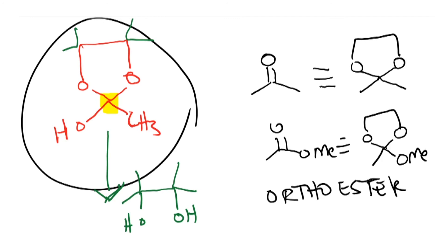To recap: the important difference between the Woodward modification and the Prévost reaction is that both use iodine and a silver salt, but in the Woodward reaction, acetate is used. The acetate forms an ortho ester intermediate, which then hydrolyzes to give the syn-diol.